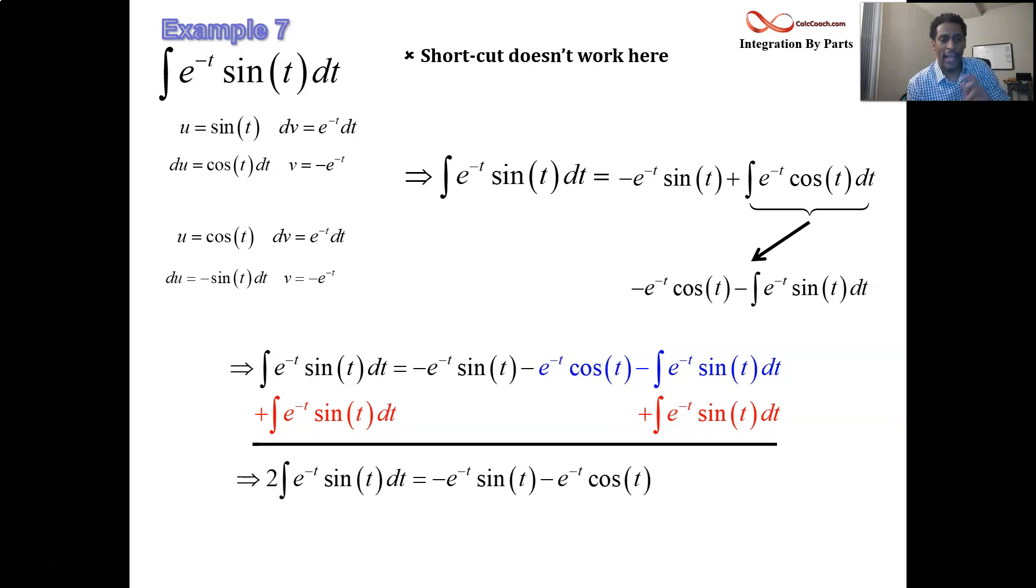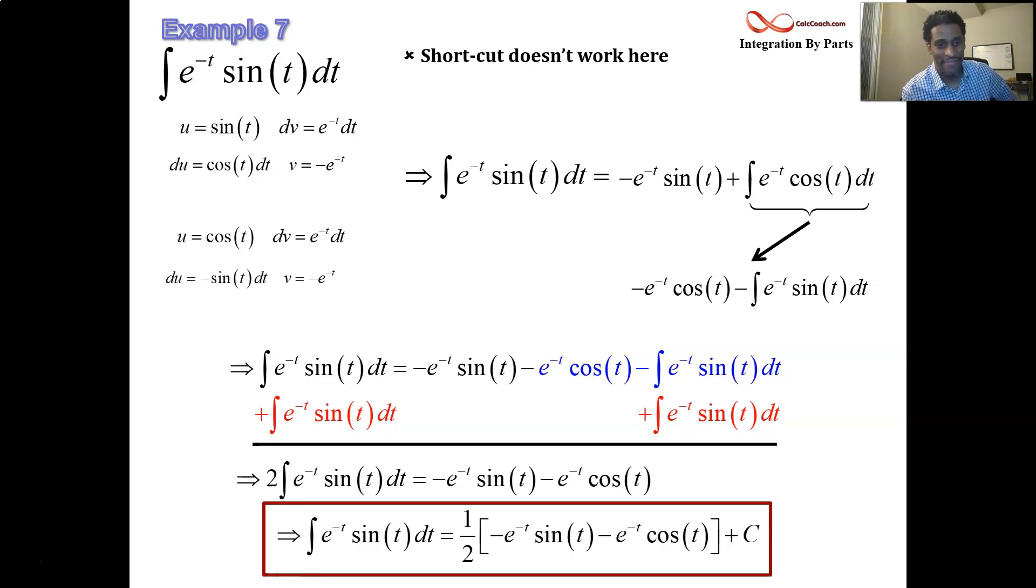What's left on the right-hand side are the two individual uv products. The uv from the first time and the uv from the second time. Our job is to find out what this integral is. And what we're looking at is what two times the integral is. And what's on the right-hand side has no integrals on it. It's just products of functions. We're done when we divide by two. So we have one-half of that. Don't forget the plus C because this is an indefinite integral.